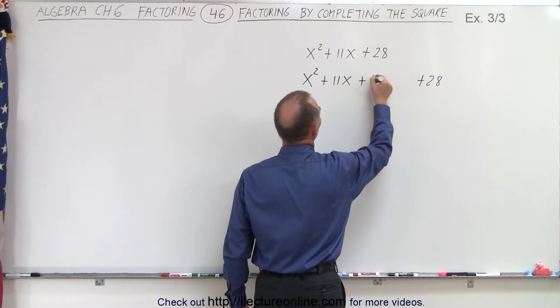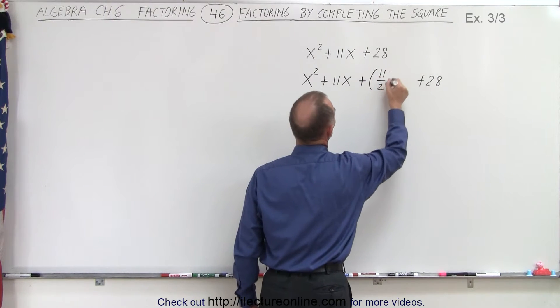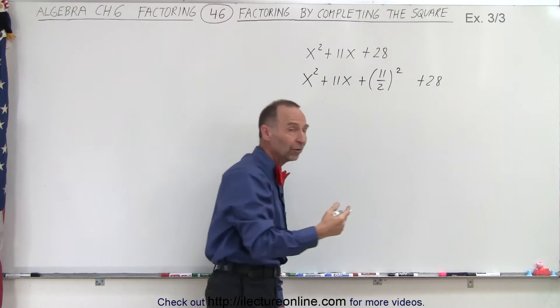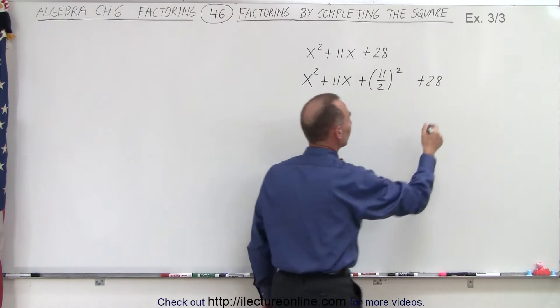So we go plus the quantity 11 over 2 squared, half the middle term squared. Of course, when we add it, we must also at the same time subtract it.